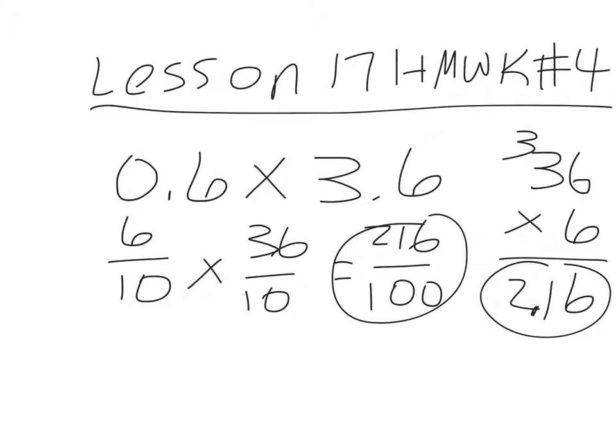Now, that is not the answer to A, because the question in A is asking you how many miles did he have left to hike. Well, if the whole trail is 3.6 and he's walked six-tenths of it, to find out what's left, you're going to have to do this subtraction.